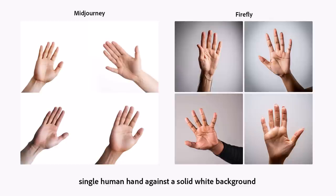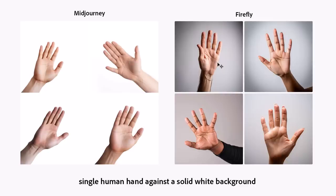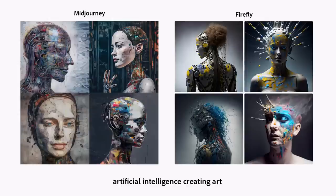Mid Journey is famously bad at generating hands, but that improved with Mid Journey 5. In this case, Mid Journey did a really good job with the prompt 'single human hand against a solid white background.' I think only one of the hands has more than five fingers. Whereas with Firefly, we got a pretty good result on all four images. However, Mid Journey gave me a white background on all photos, whereas Firefly gave me a gray background. Finally, I asked both to show me artificial intelligence creating art. I think they both did a pretty good job. I like the variety better on Firefly, and even though Mid Journey's images are also good, they're all the same style. So I'm going to give this round to Firefly.